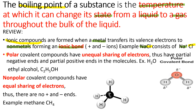Now let's go to polar covalent compounds. Polar covalent compounds are composed of atoms where one is more electronegative and the other is less electronegative, resulting in an unequal sharing of electrons. That is why there are negative ends and positive ends in the molecules. An example is H2O. In the molecular structure of H2O, oxygen — which is more electronegative than hydrogen — has a negative charge.